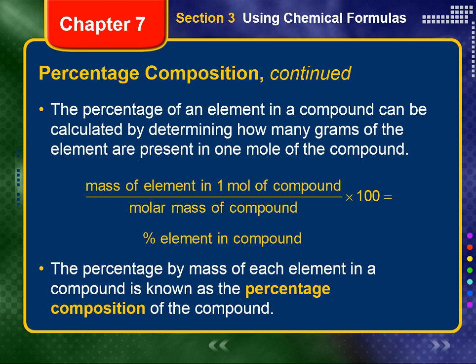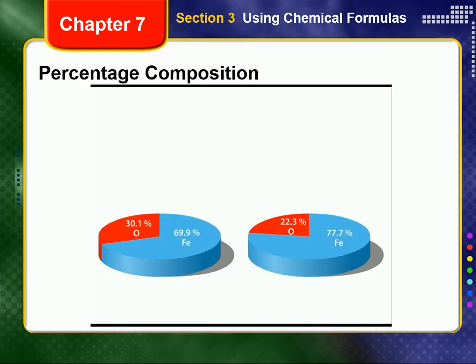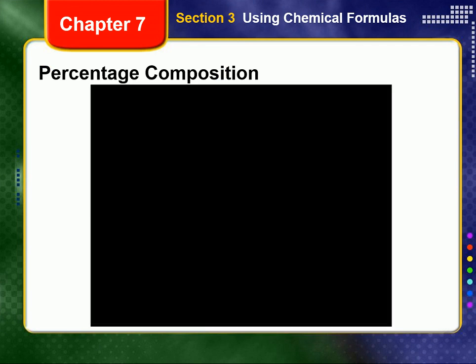The percentage by mass of each element in a compound is known as the percentage composition of that compound.